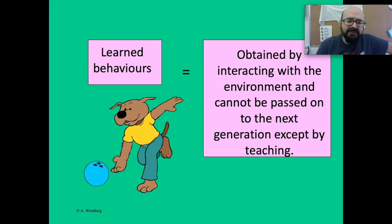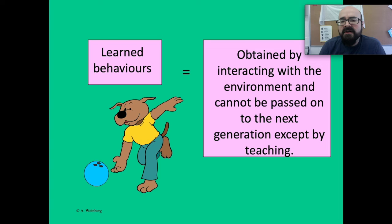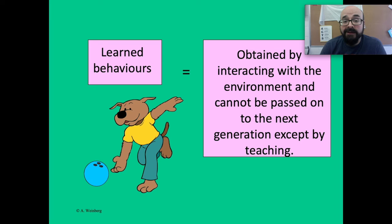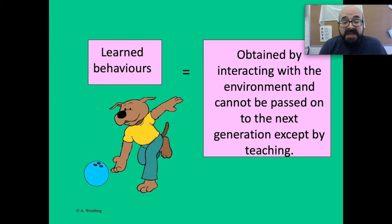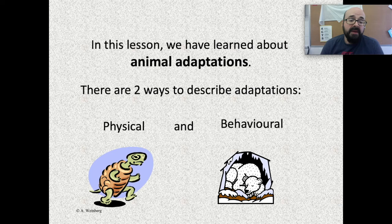Learned behaviors are obtained by interacting with the environment and cannot be passed on to the next generation except by teaching. Some predatory birds are taught how to hunt small rodents in fields. If they are injured and adopted by humans without the opportunity to learn from their parents, they have no idea how to hunt and kill small animals. Unfortunately, humans can't teach them that. So if you find a bird in a field, don't pick it up — let it go. Either a parent will raise it properly or it will be removed from the food cycle.